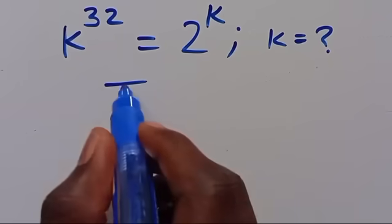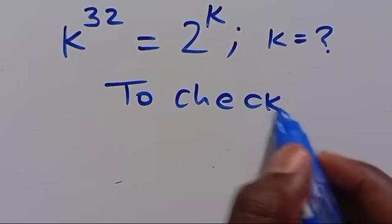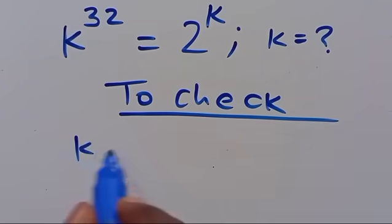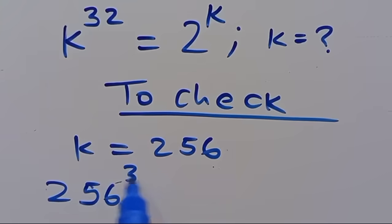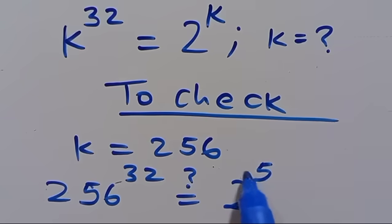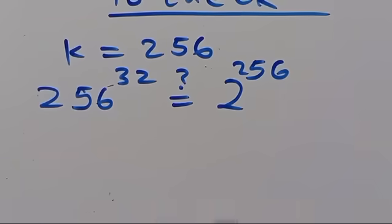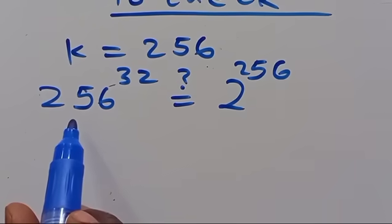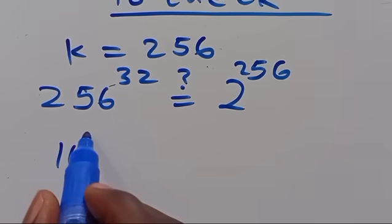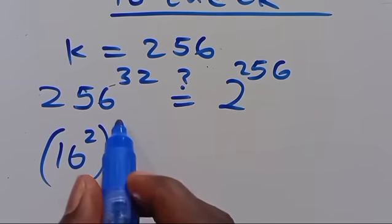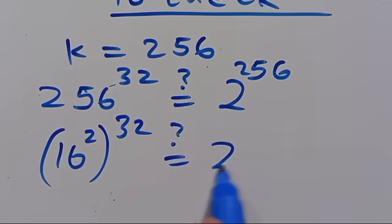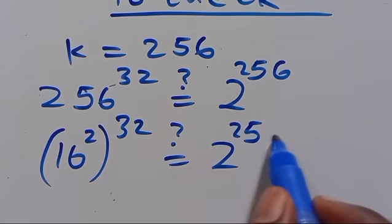Now, to check: we have K equals 256. So from here we have 256 to the power of 32. Is it going to give us 2 to the power of 256? Let's see. From here, we can have 256 as 16 to the power of 2, then to the power of 32, equals 2 to the power of 256. We can also write 16 as 2 to the power of 4, so we have 2 to the power of 4, to the power of 2, to the power of 32.